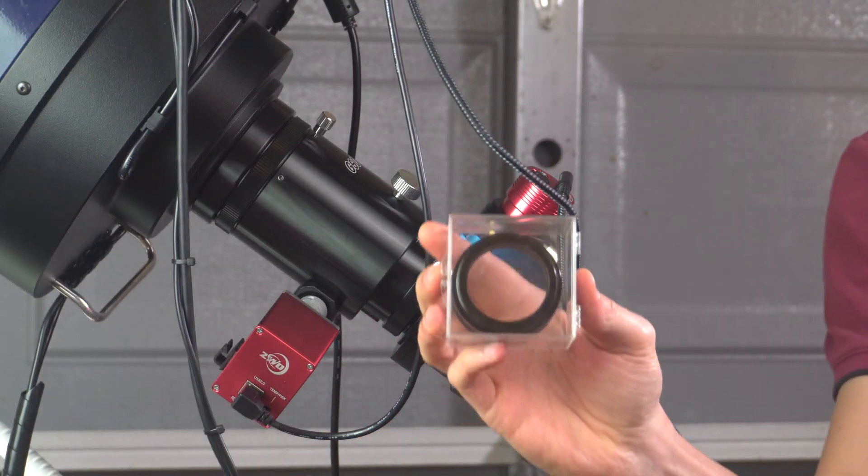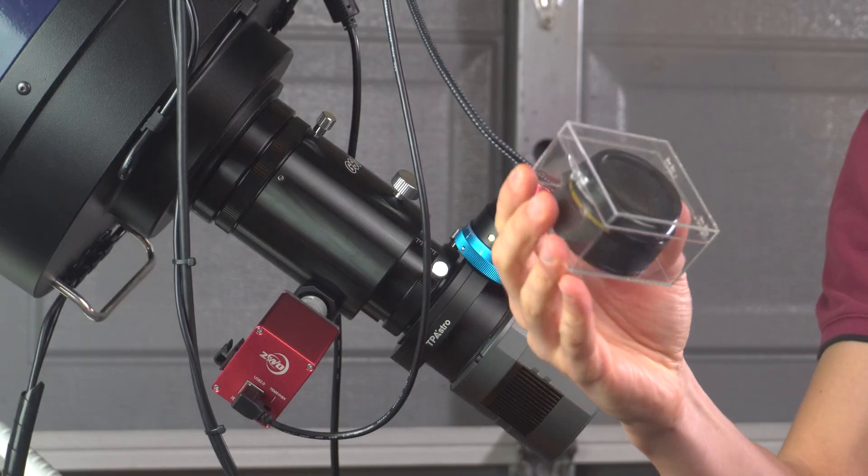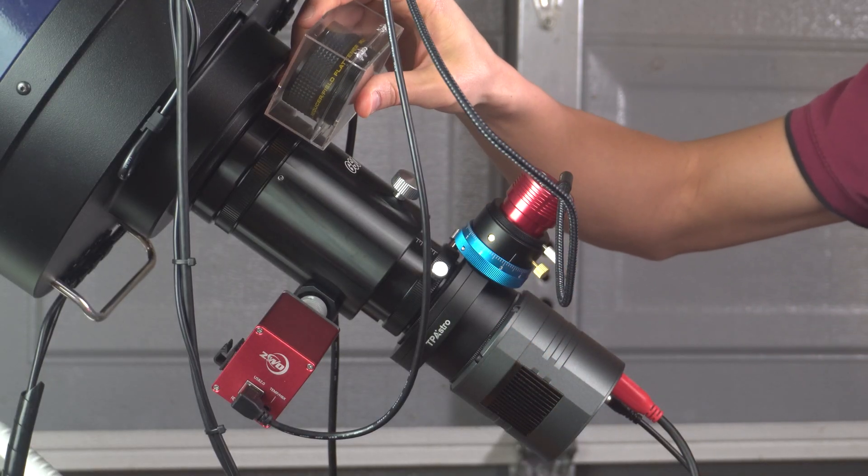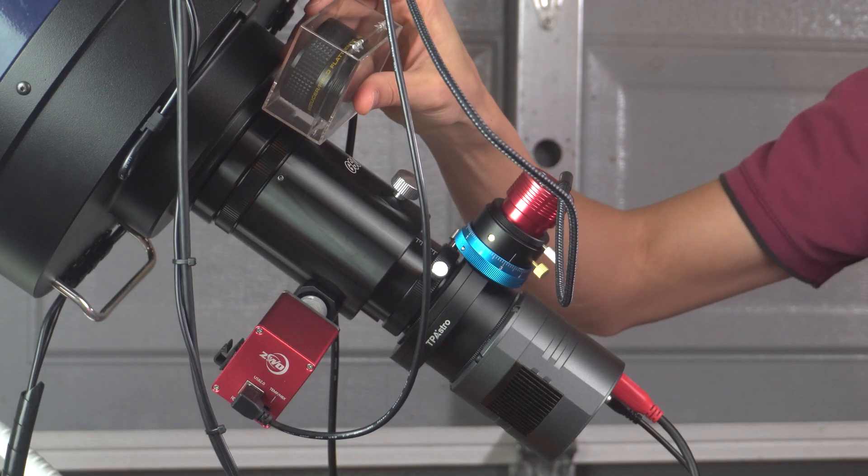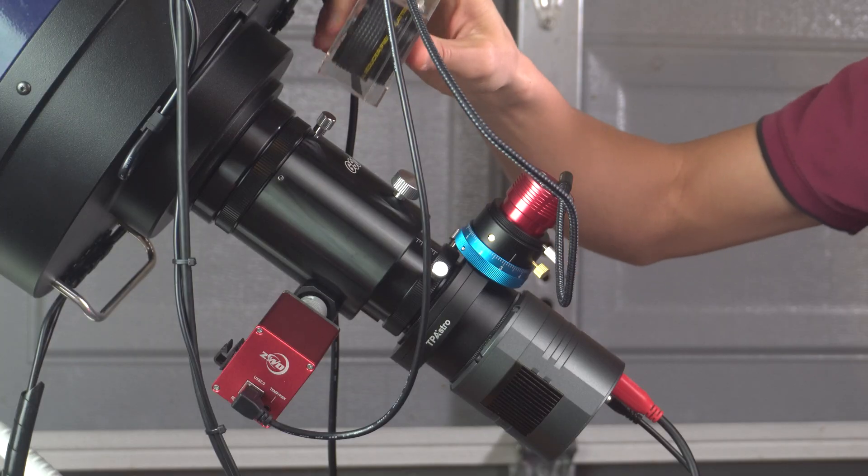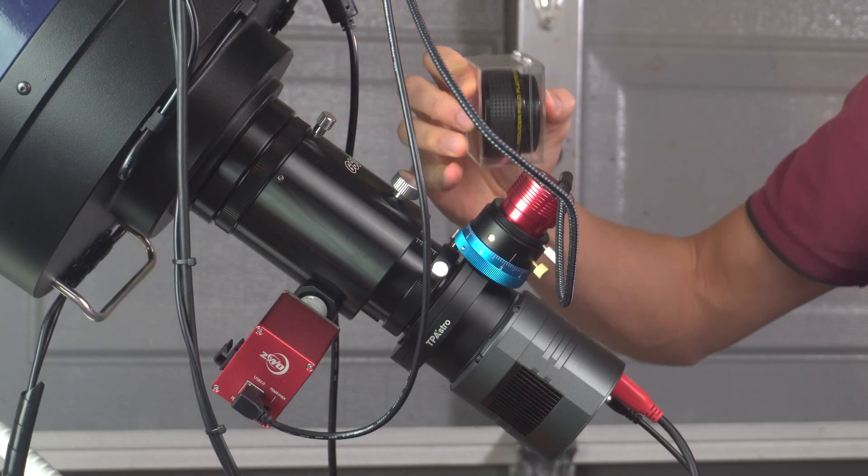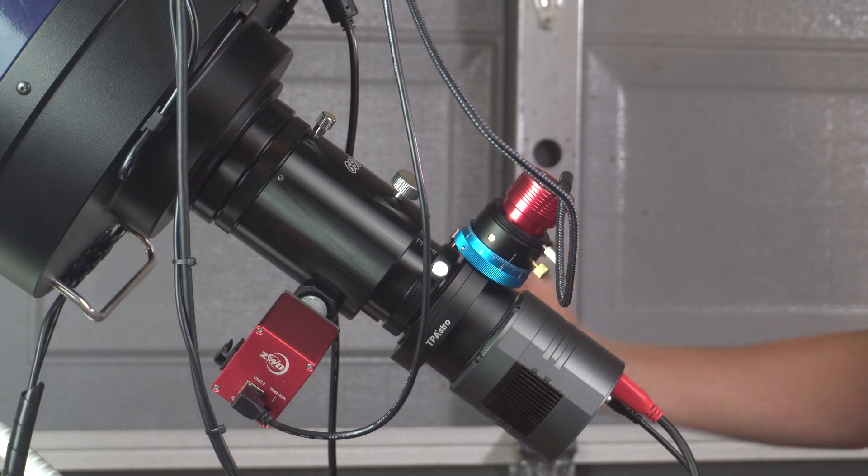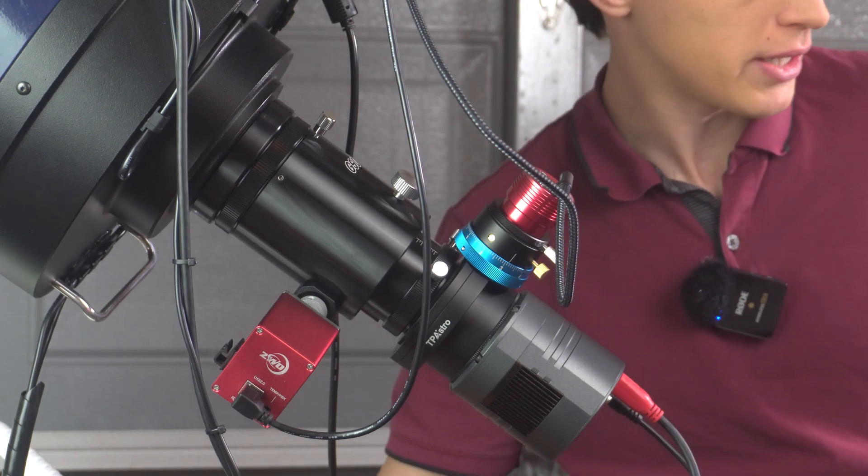So here is an example of a standard Schmidt-Cassegrain corrector that basically you place right behind the OTA and you have 105 mm of back focus. The thing is, if I place the corrector in front of the focuser and when I have to focus the telescope, I would always change the distance of the back focus and it's something that you want to avoid.